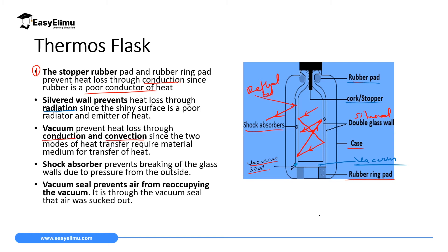The vacuum seal prevents air from coming into the vacuum. If this seal is broken when the flask falls, air from outside will enter and the vacuum flask will become inefficient. Then we have shock absorbers, which prevent the thermos flask from breaking. The silvered double walls are made of glass, which is very fragile, so shock absorbers and rubber ring pads protect against breakage from a slight fall.